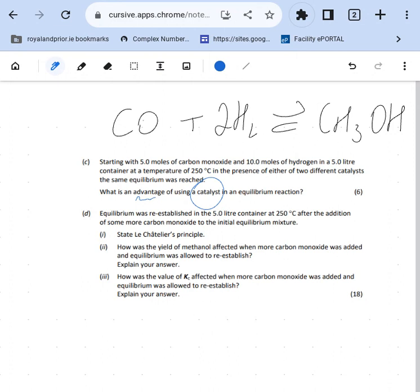So a catalyst increases the rate of both the forward and the reverse reaction by the same amount. That's your key thing - increases the rate of forward and the reverse reaction by the same amount. Activation energy is lowered and equilibrium is reached faster. So that's the key thing there: equilibrium is reached faster, your activation energy is lowered, and it increases the rate of forward and the reverse reaction by the same amount.